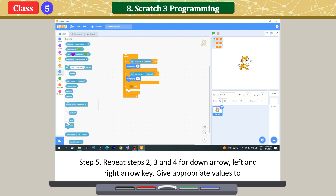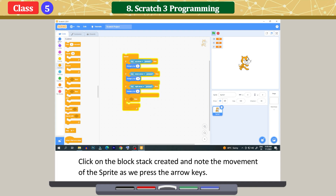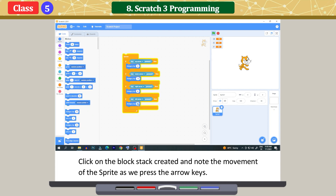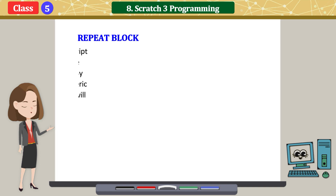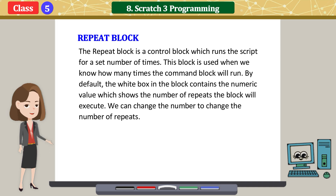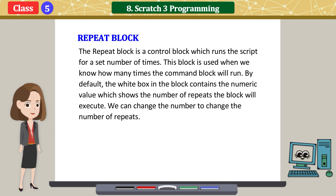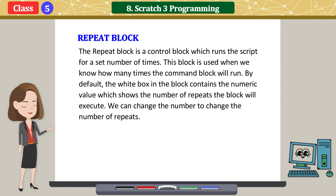Click on the block stack and note the movement of the sprite as you press the arrow keys. The repeat block is a control block which runs a script for a set number of times. It is used when we know how many times a command block will run. By default, the white box in the block contains a numeric value showing the number of repeats. We can change this number to change how many times the block executes.